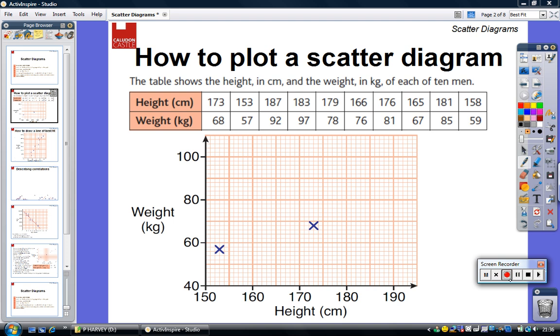The first thing we're going to do is look at how to plot a scatter diagram. A scatter diagram shows the relationship between two sets of data, in this case height and weight. I can see that two points have already been plotted on my scatter diagram.